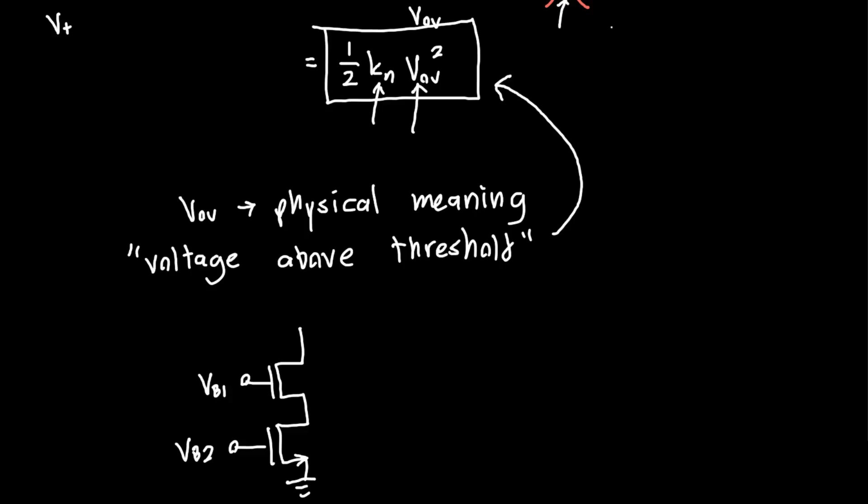And so we'll say, well, okay, we want both these transistors to be in saturation. And that means that we need to have VGS minus VT to be less than VDS, or more elegantly now, the overdrive voltage to be less than VDS.